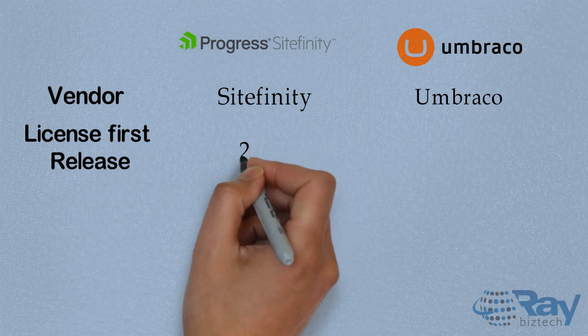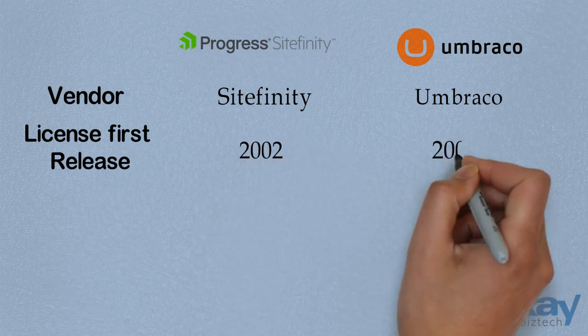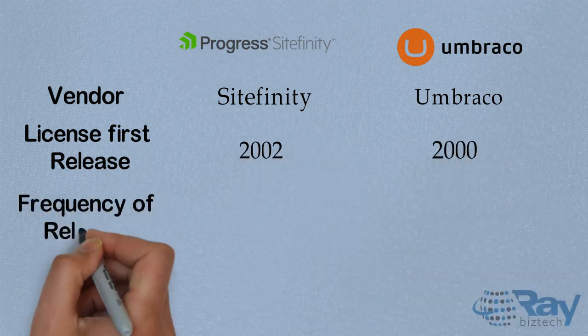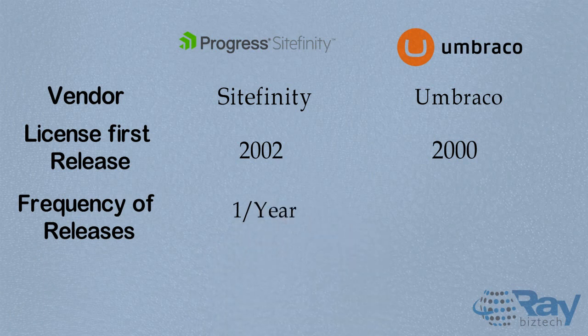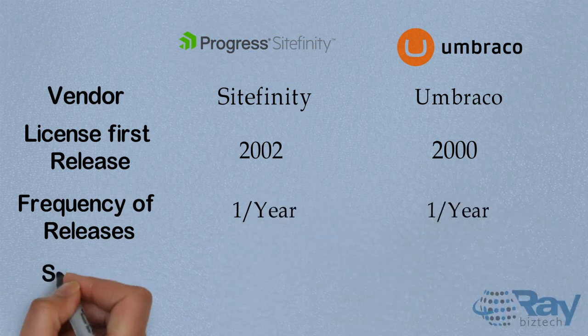License first release: Sightfinity was first released in 2002, and Umbrako was also first released in 2002. Frequency of releases: Sightfinity releases once per year, and Umbrako also releases once per year.